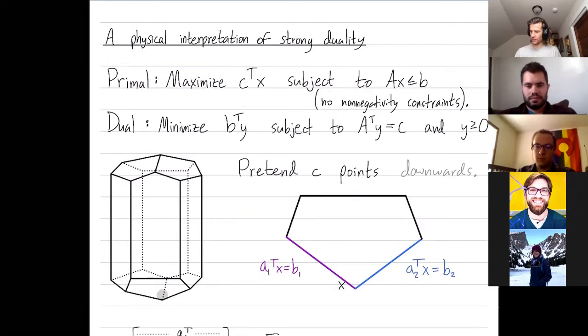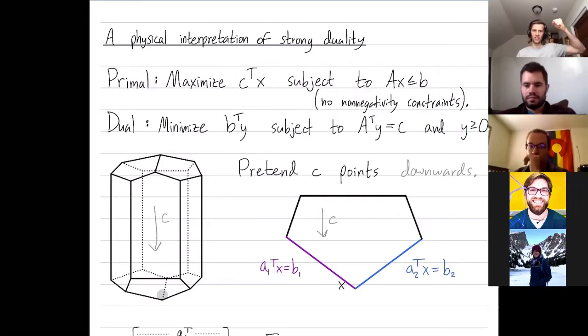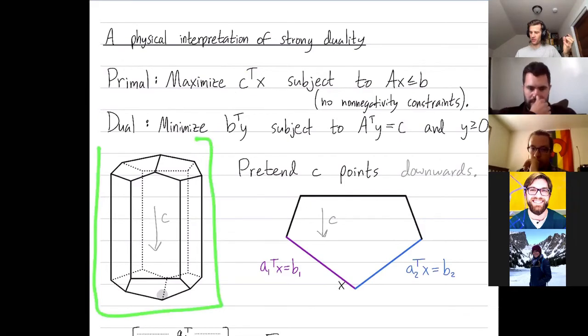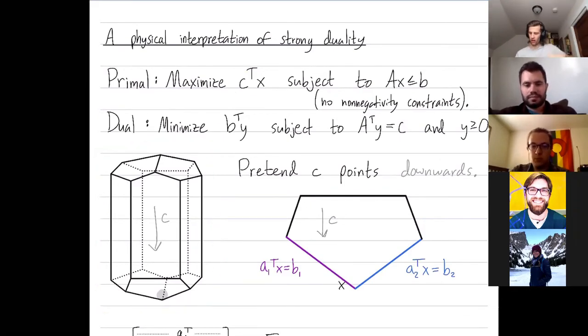So pretend this direction vector C is pointing downwards. We're going to use gravity as our force. So physically how would you optimize this linear program? You want to get as far as you can in the direction C. You want to move as far down as possible. Just take a metal ball and drop it in your feasible region. Here's a 3D picture, pretend that's our feasible region. Just drop a metal ball and then it comes to rest at this bottom right where it's supported in general by three different faces.